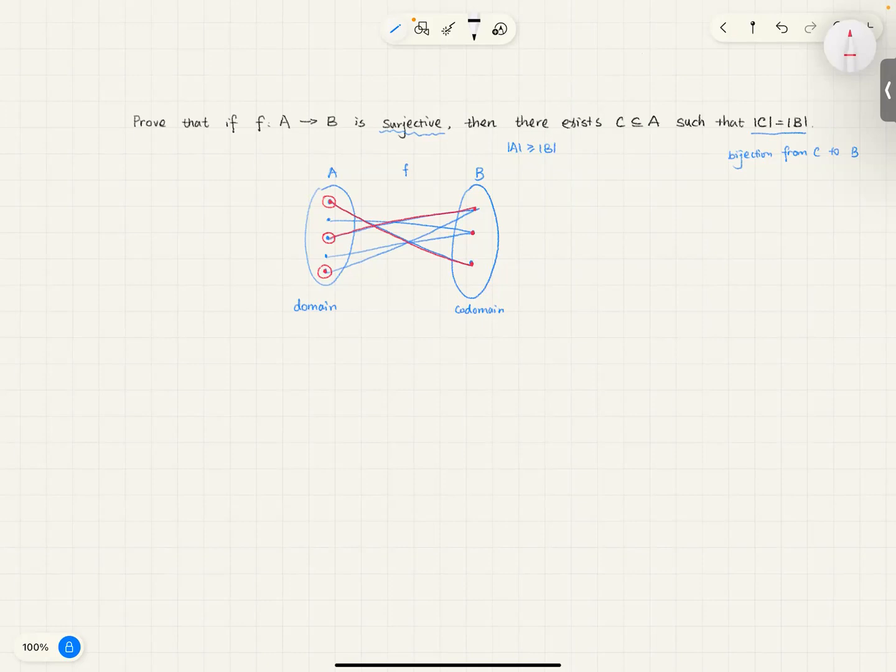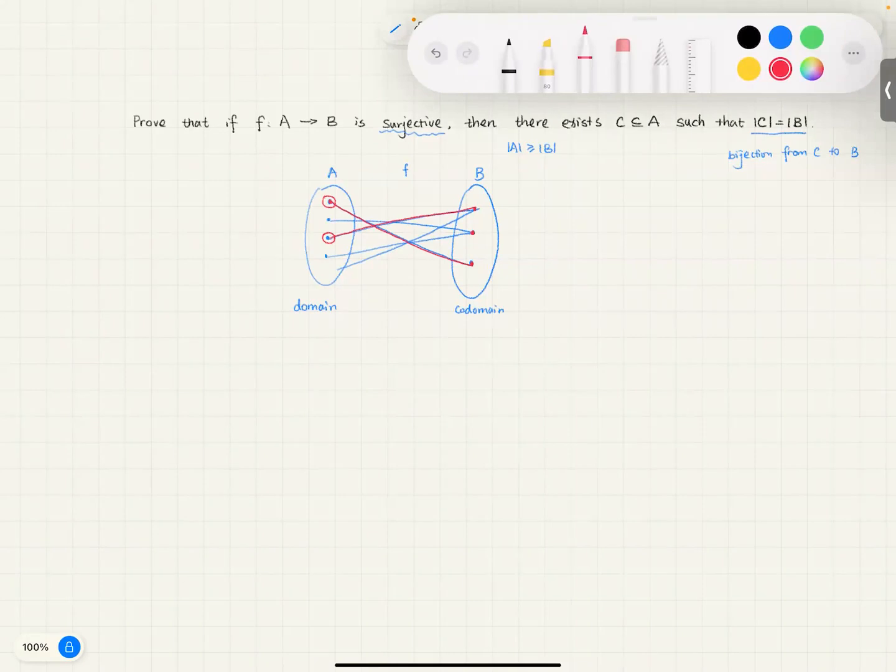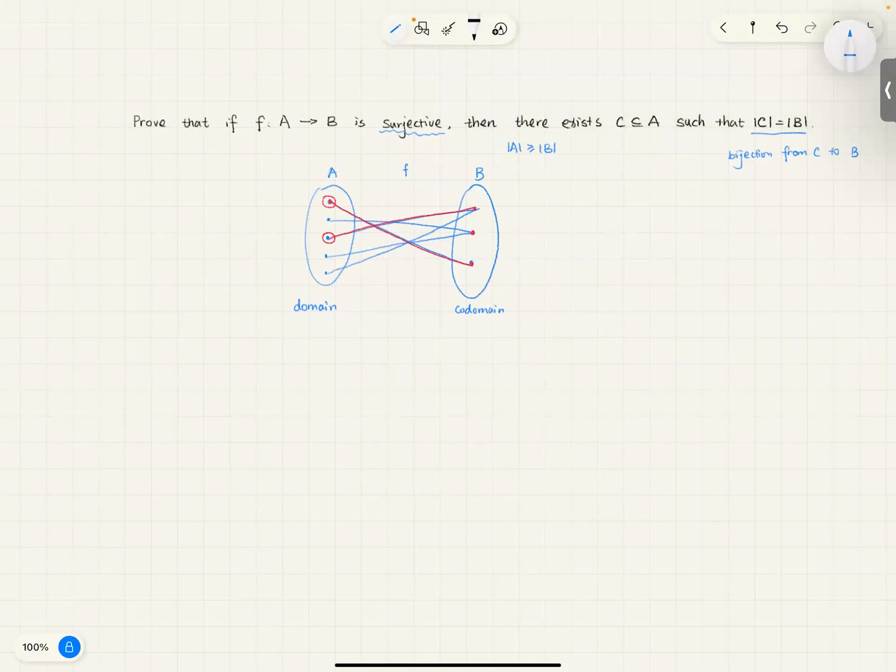Oops, seems like I picked the wrong one, because this one is not mapping to this. Let me fix this. So, I need to pick one of those two, so let's pick this one. And this is mapping to this element. So, the three elements in A that I circled, I would put them in my C. Them together would form a bijection to B using the same f.